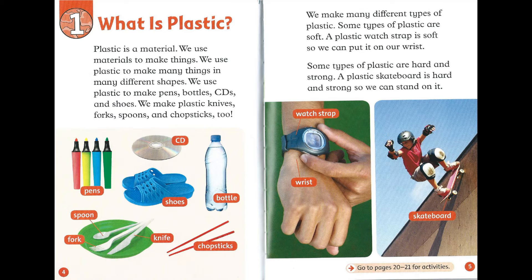We make many different types of plastic. Some types of plastic are soft. A plastic watch strap is soft, so we can put it on our wrist. Some types of plastic are hard and strong. A plastic skateboard is hard and strong, so we can stand on it.